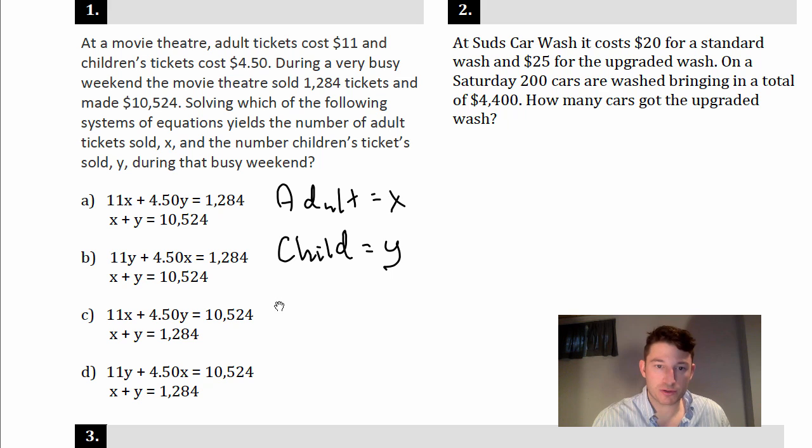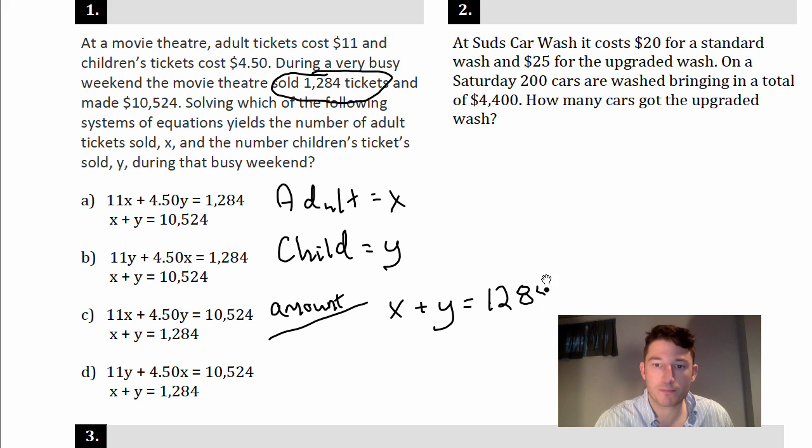Like I said before, identify the amount equation first. So my amount equation is gonna be, I've got some amount of adult tickets plus some amount of children's tickets, and they tell us they sold 1,284. So X plus Y equals 1,284. If I wanted to try and get this done really quick, I could just look at my answers for X plus Y equals 1,284. Now we're down to two.